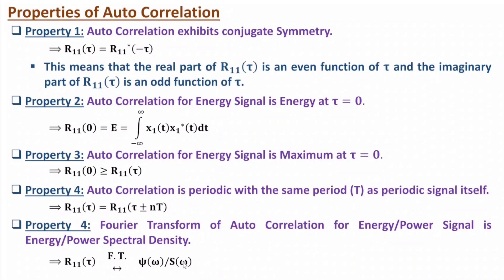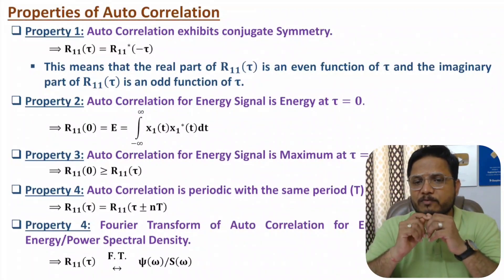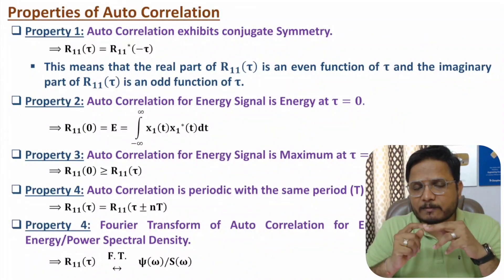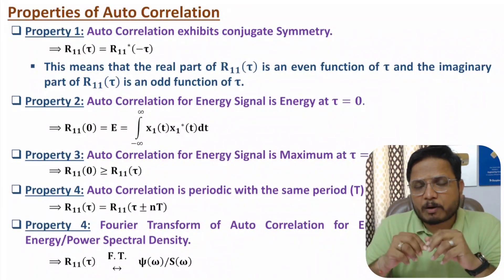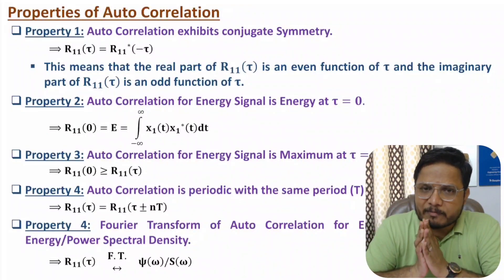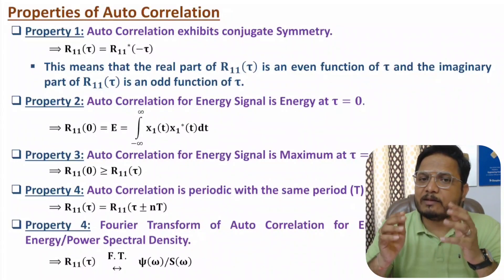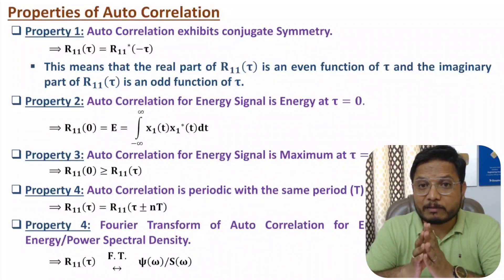These are the properties of auto correlation and cross correlation. In the next video, I will give proofs of all these properties, and in future videos we will be solving some interesting questions using these properties. I hope you enjoyed this session. If you have any confusion, just place it in the comment section — I will be happy to help. Thank you so much for watching.